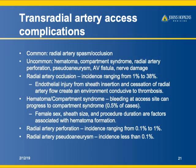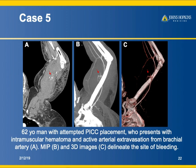Transradial arterial access complications include arterial spasm and occlusion. Less common are hematomas, radial artery perforations, AV fistula and nerve damage. Radial artery occlusion occurs in up to 38% of cases. Compartment syndrome from bleeding occurs in less than 1% of cases. Female sex, sheath size, and procedure duration are key risk factors. Radial artery perforation and pseudoaneurysms are fortunately very rare. Here's a patient with a recent attempted PICC placement who now has an intramuscular hematoma with active extravasation from the brachial artery — removing the bone makes everything easy to see.